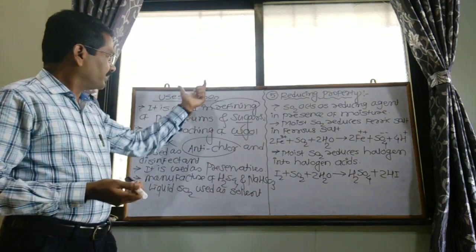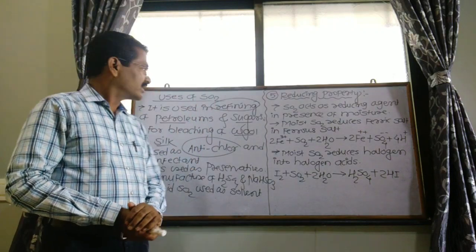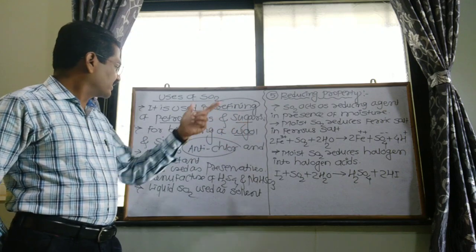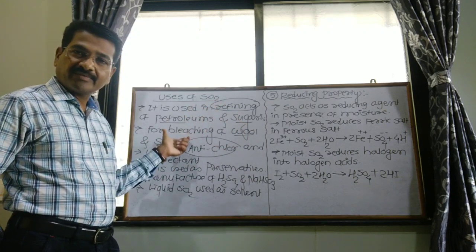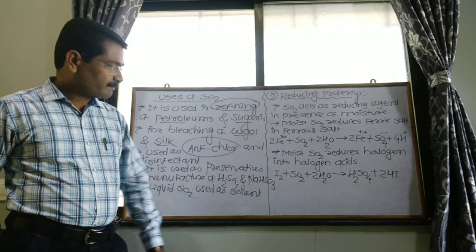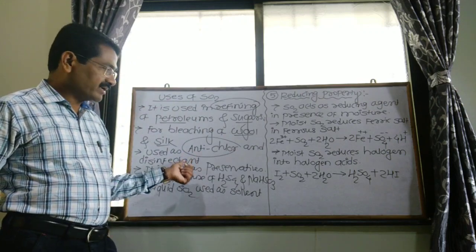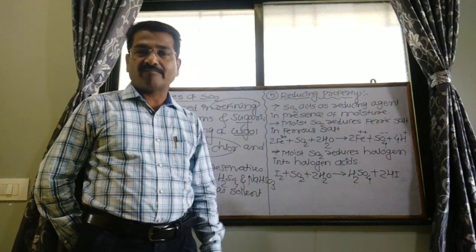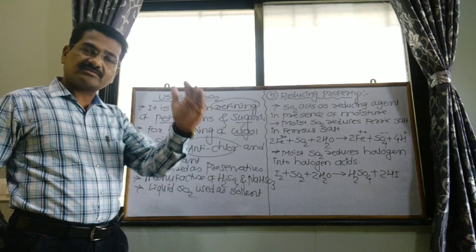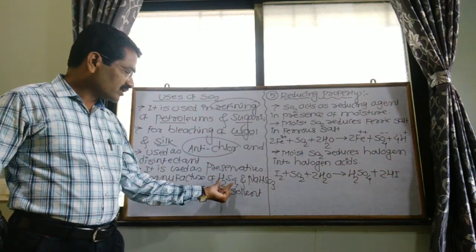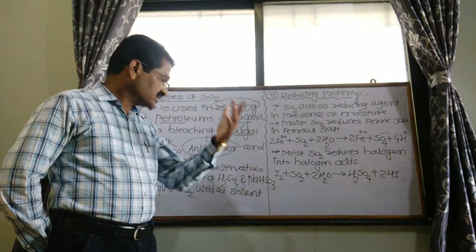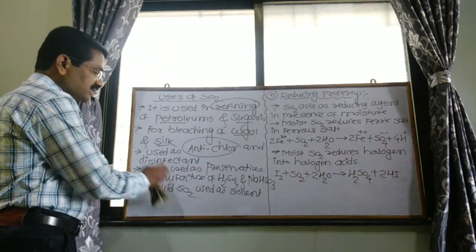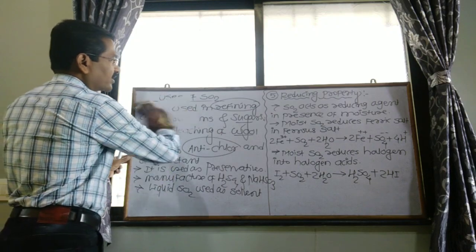So these are the simple uses of sulfur dioxide: first, refining of petroleum and sugars; second, bleaching of wool and silk; third, used as anti-chlor and disinfectant; fourth, used as preservative for biological specimens; fifth, used in manufacture of sulfuric acid and sodium bisulfate; and last, liquid SO2 is used as an organic solvent for substances that cannot dissolve in water.